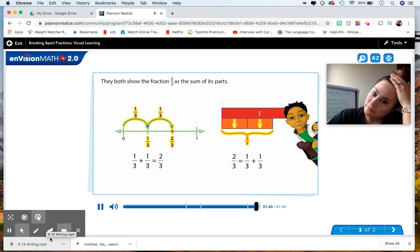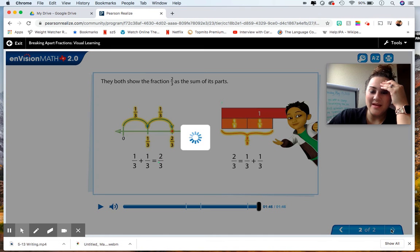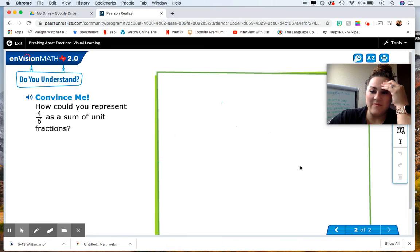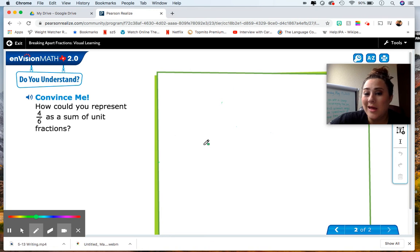I'm going to practice my long jump now. Okay. So on the bottom of page 596, you will have the convince me question. How could you represent four-sixths as a sum of unit fractions? Well, I want you to draw a picture and then show your work.